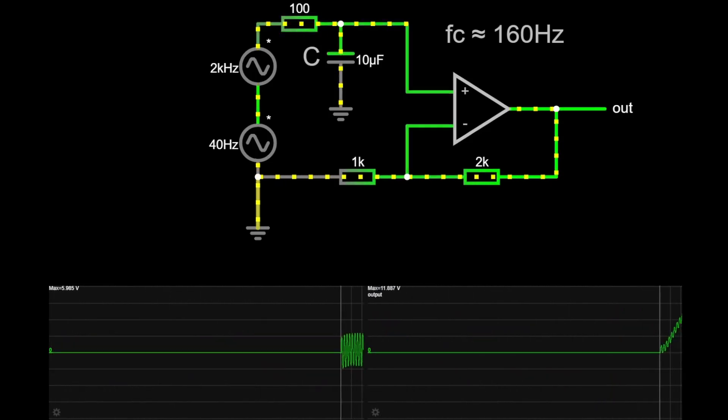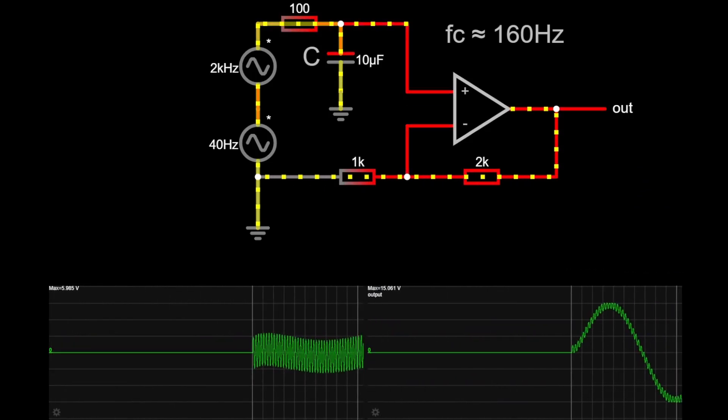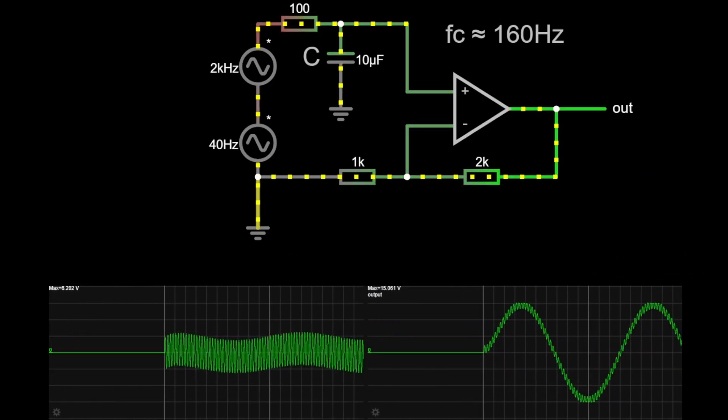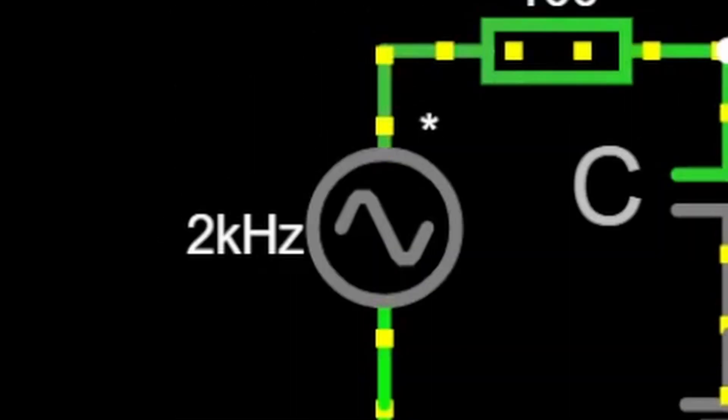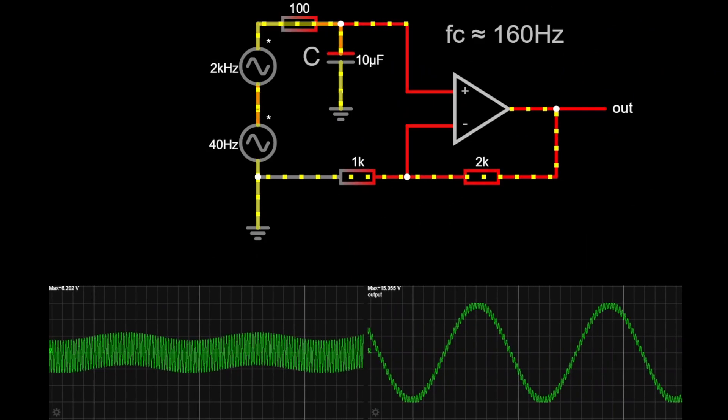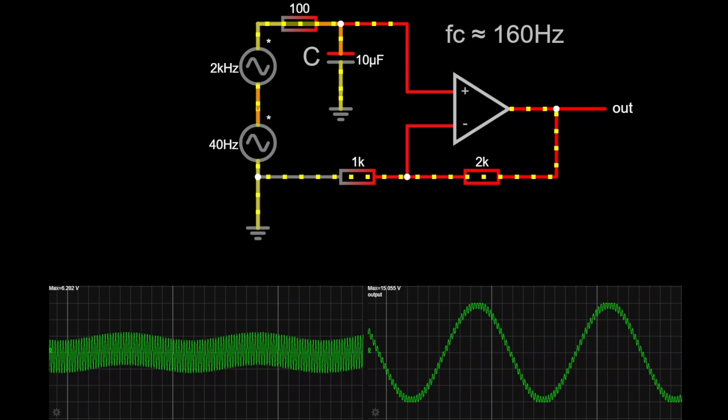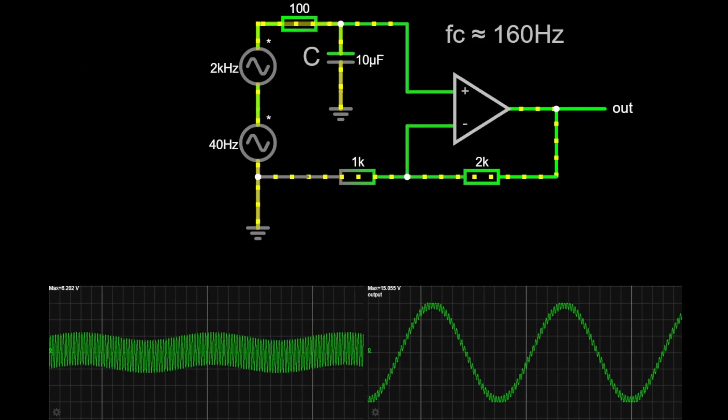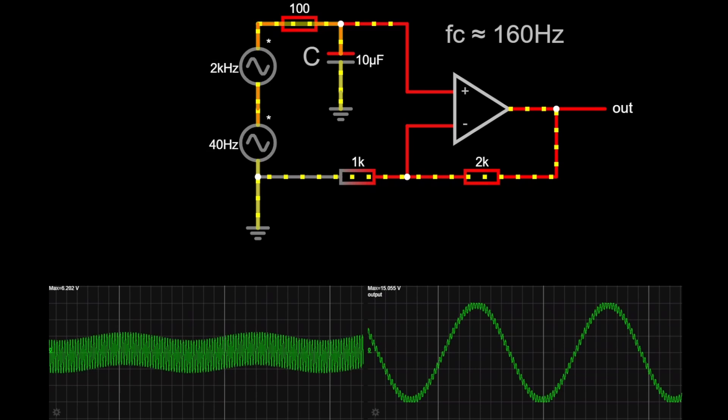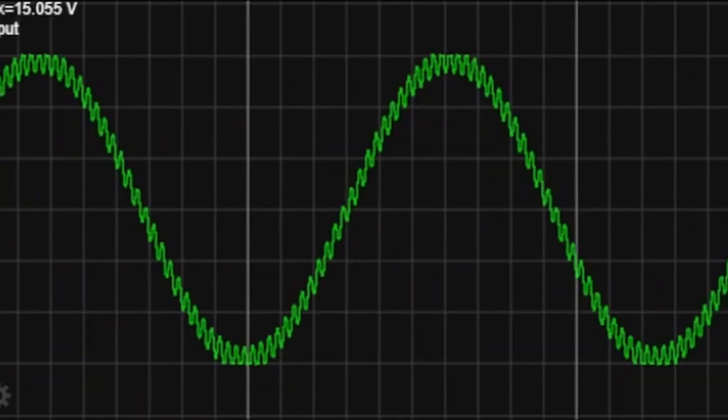Here is an example of an op amp being used as a low-pass filter. The input signal consists of a 40 Hz and a 2 kHz sine wave. With these capacitor and resistor values the cutoff frequency is approximately 160 Hz. So only the 40 Hz wave is amplified. You can see that clearly on the right hand side.